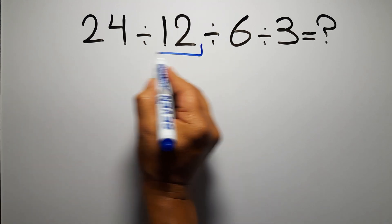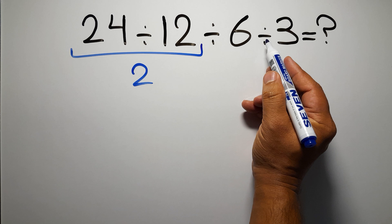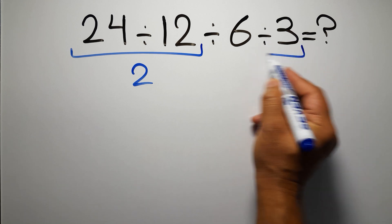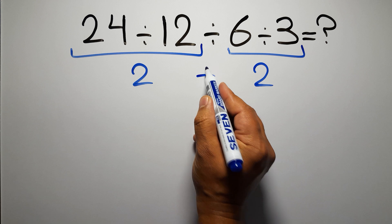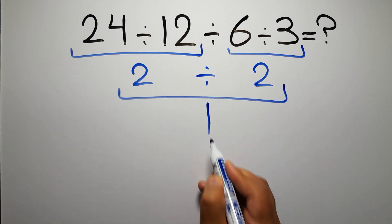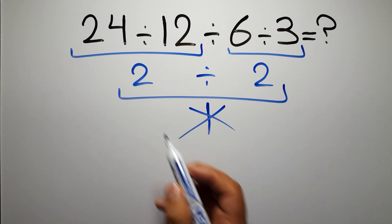24 divided by 12 gives us 2, and 6 divided by 3 equals 2, so 2 divided by 2 equals 1. But this answer is not correct because according to the order of operations, when we have more than one division in an expression we have to work from left to right.